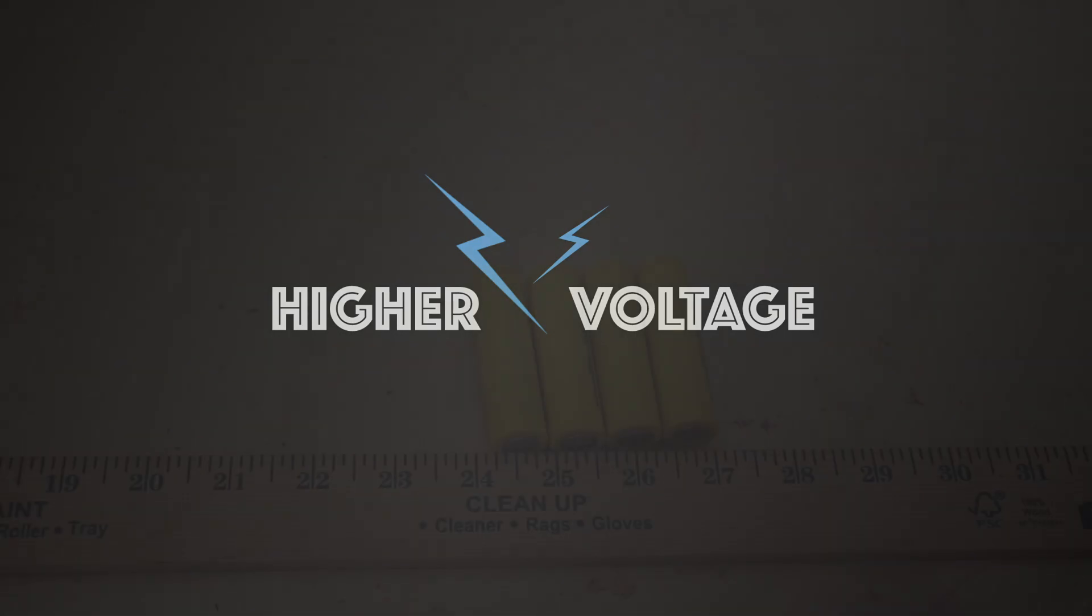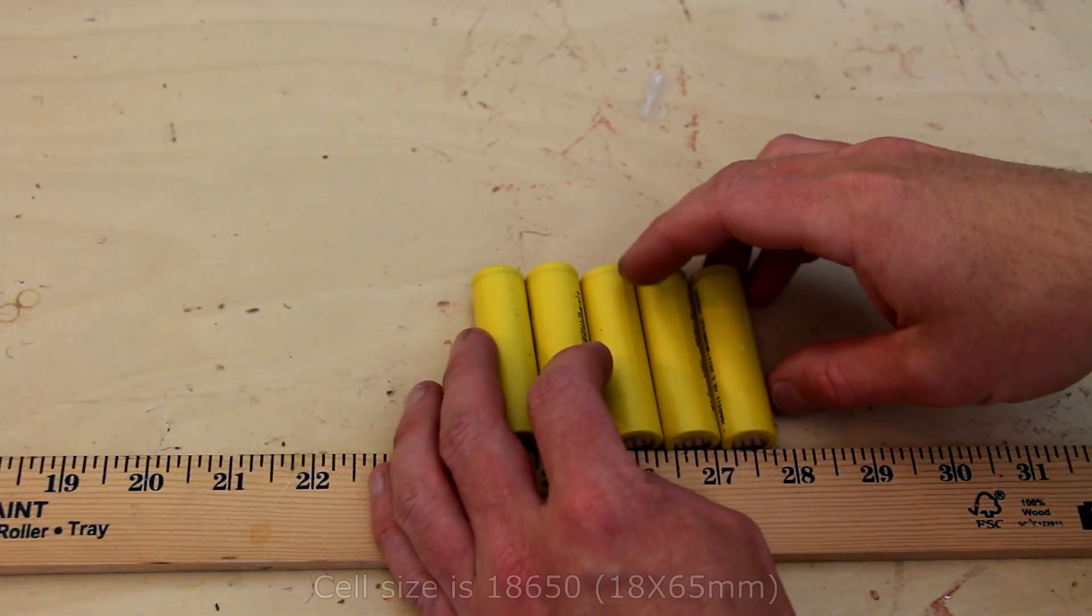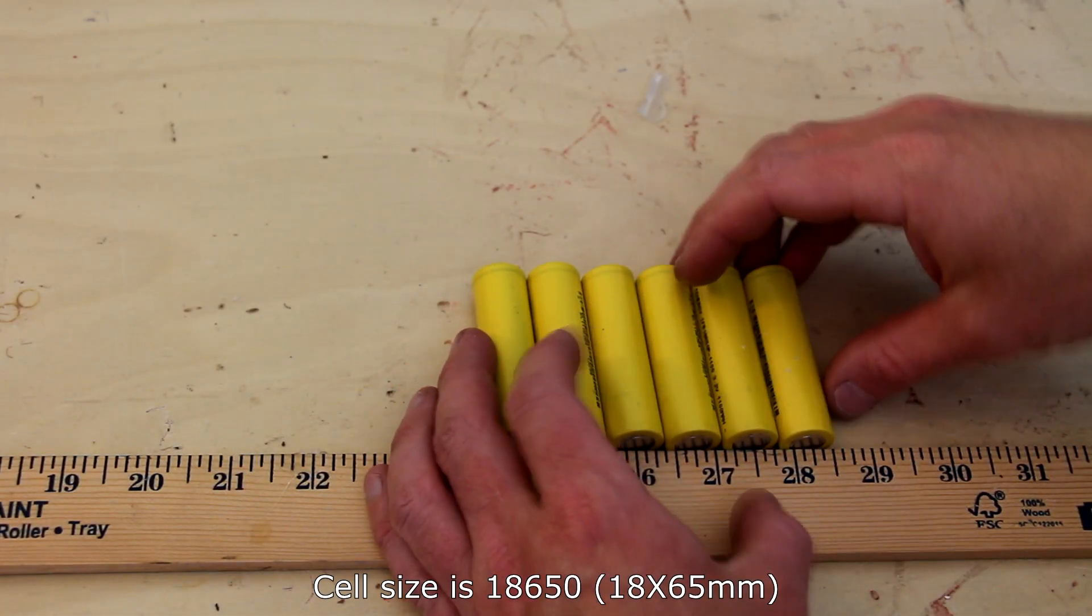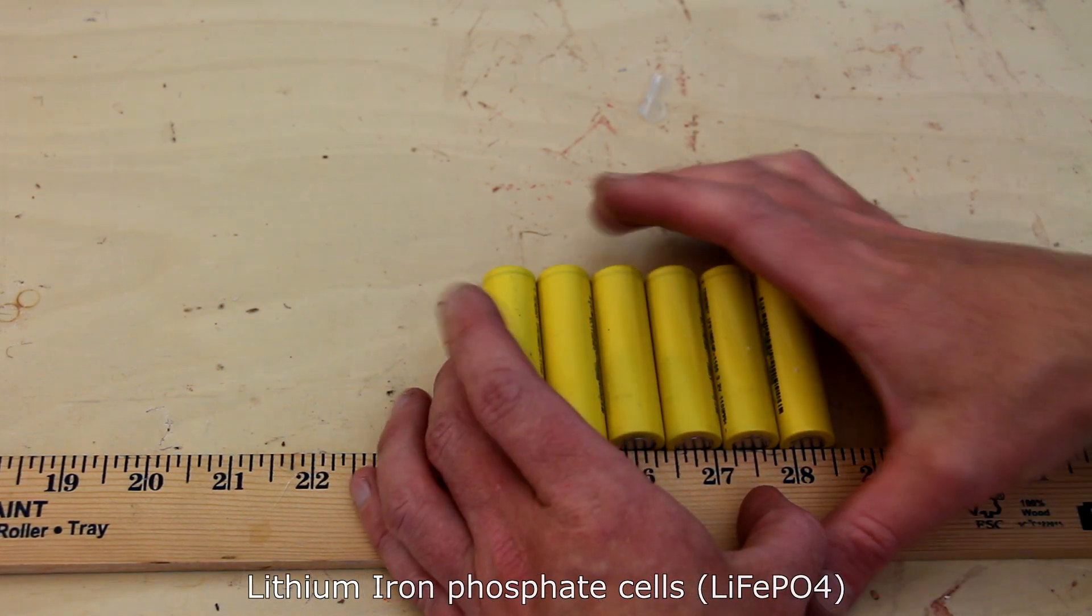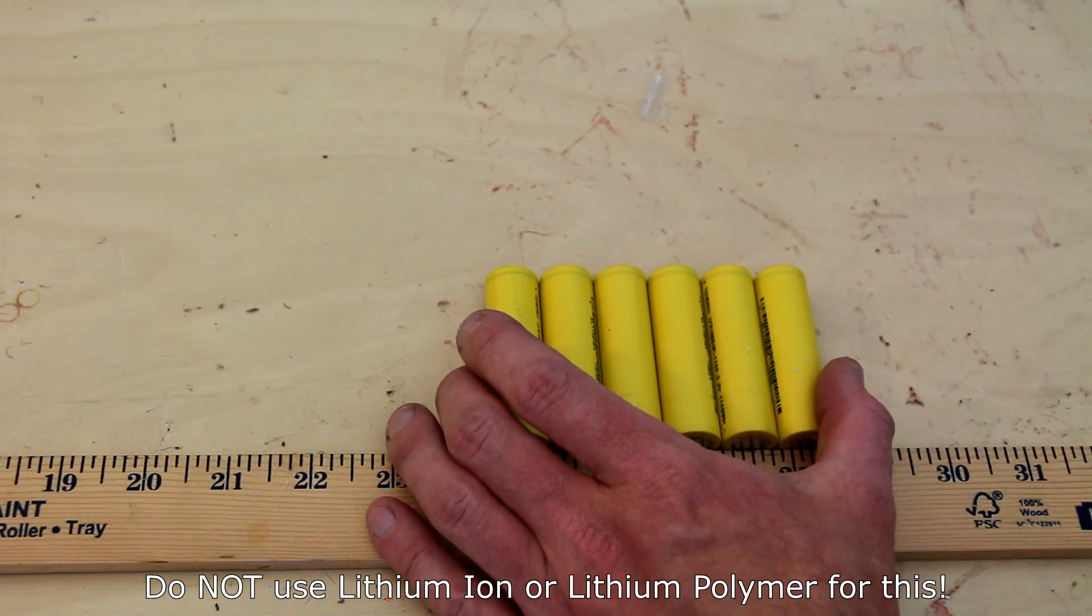I'm Alex Greve and welcome to Higher Voltage. This battery uses four sets of six 18650 lithium iron phosphate cells, so a total of 24 cells will be needed.